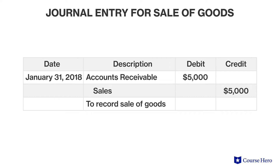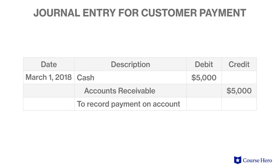Suppose a customer buys $5,000 worth of goods on credit. Both sales and accounts receivable would increase $5,000. Later, when the customer pays cash for the amount owed, the company's cash is debited, which increases the cash balance, and the receivables are credited, which reduces the receivables balance.